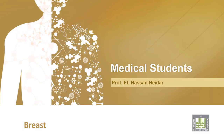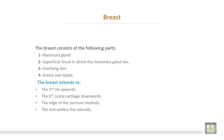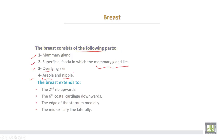The breast lies in the pectoral region and consists of the following parts: number one, mammary gland; number two, superficial fascia in which the mammary gland lies; number three, overlying skin; number four, areola and nipple.